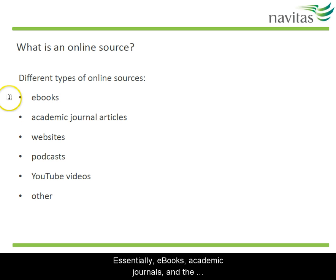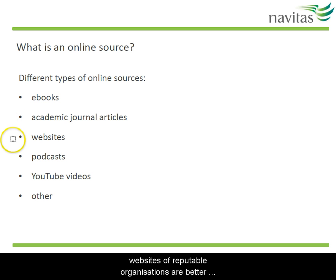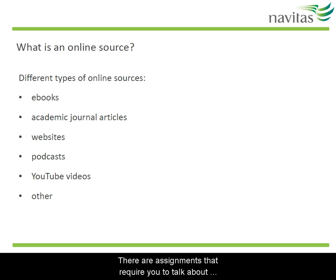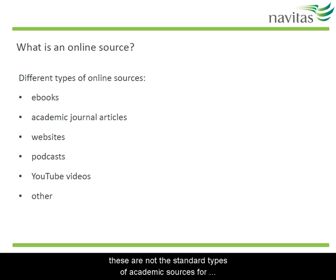Essentially, e-books, academic journals and the websites of reputable organisations are better sources of information than other online sources. There are assignments that require you to talk about videos on YouTube or newspaper articles, but these are not the standard types of academic sources for most assignments.